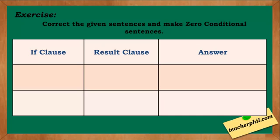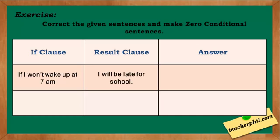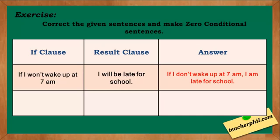For our exercise, correct the given sentences and make zero conditional sentences. The first one: if I won't wake up at 7 a.m., I will be late for school. The answer is: if I don't wake up at 7 a.m., I am late for school.